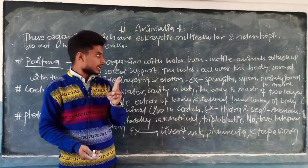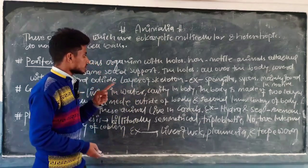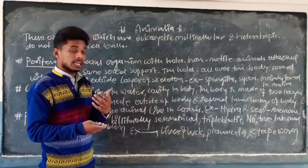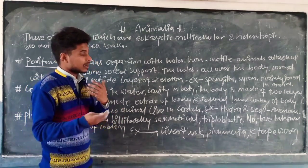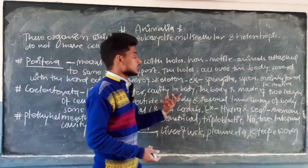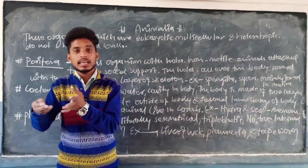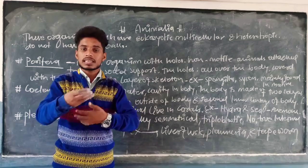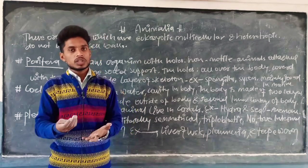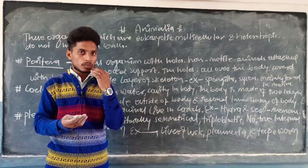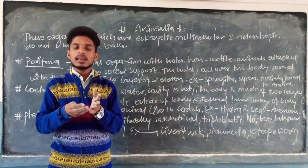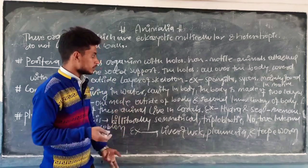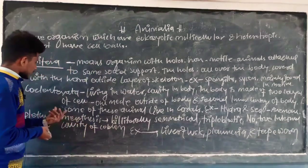Coelentrata ऐसी animals हैं जिसमें cavity present रहती है। Most of the animals living in water — जादतर animals Coelentrata के water में रहते हैं। जो body है वह two kinds के layer of cells से मिलकर बनी होती है। First layer of cells outer skeleton का formation करते हैं, और दूसरी kinds के cells lining of the inner body का formation करते हैं।